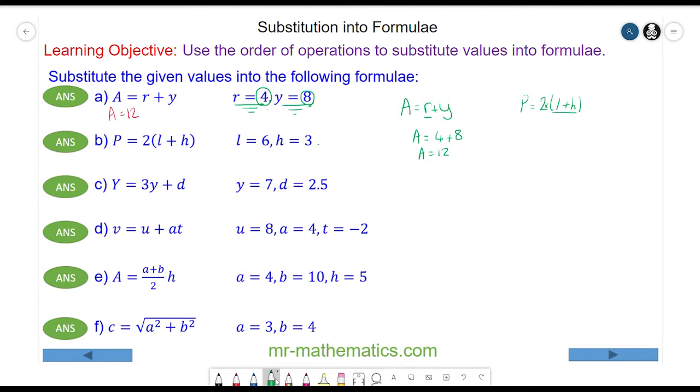So p equals two multiplied by nine, so p equals 18.